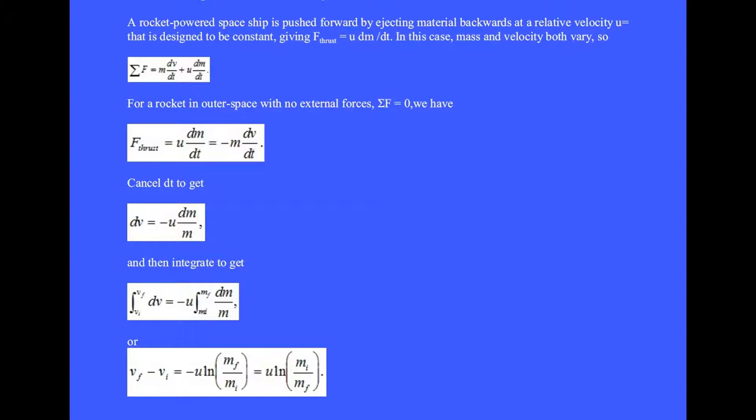For a rocket in outer space with no external forces, the sum of the forces is zero. We solve for the thrust force equals u dm dt equals minus m dv dt.